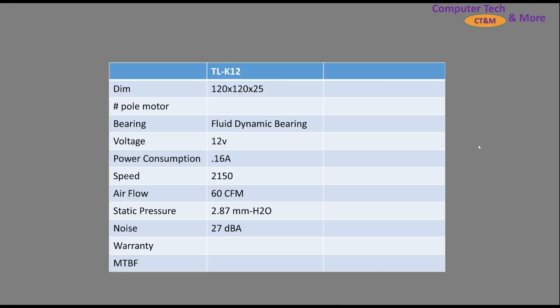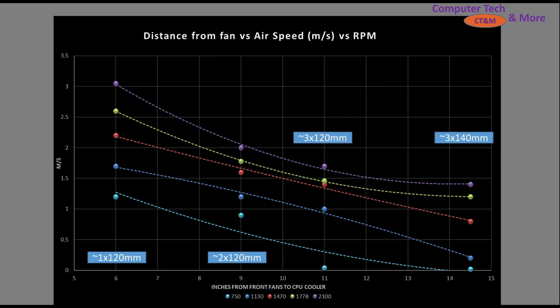The specs: fluid dynamic bearing, 12V, 0.16A, 2150 RPM. That's a great RPM for a standard all-rounder—not maximizing performance like 3000 RPM fans, but better than 1500 RPM fans. 60 CFM airflow, 2.87 mmH2O static pressure, and 27 dB by their ratings, though that won't line up with my decibel readings.